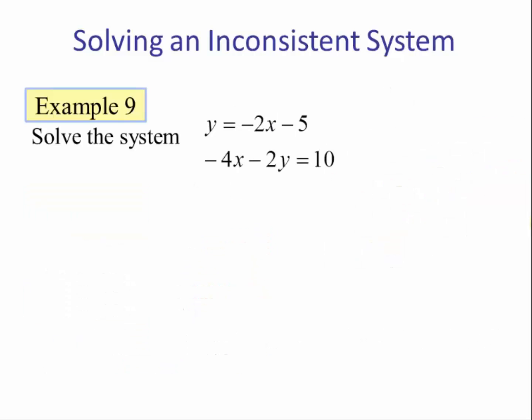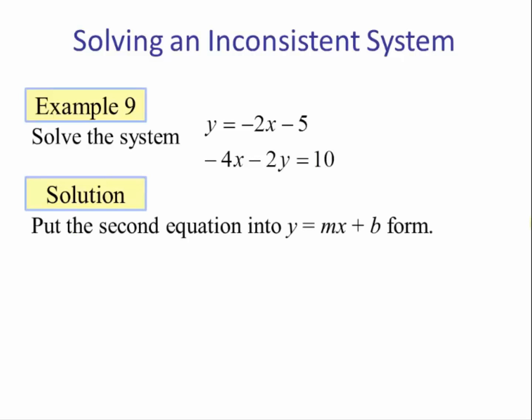Example 9: Solve the system y equals negative 2x minus 5 and negative 4x minus 2y equals 10. Solution: Our first step is to take the second equation and put it into y equals mx plus b form so we can graph it.